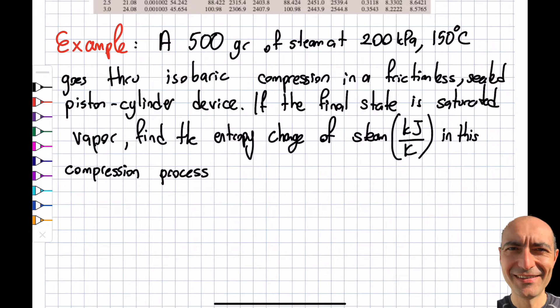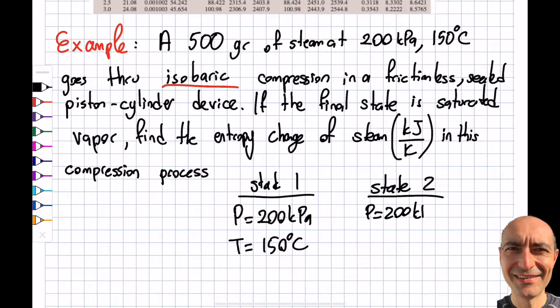I have half a kilogram of steam at 200 kilopascals. Let me write state 1: P equals 200 kilopascals, T equals 150 degrees Celsius. The process is isobaric—I've got to read carefully. What does isobaric mean? Between state 1 and state 2, pressure will be constant. So this is also 200 kilopascals. It's a compression in a frictionless piston-cylinder device. The final state is saturated vapor, so X equals 100% or 1. I need to read V, S, and whatever else I need from the table. Find the entropy change of steam in this compression process. The units should be kilojoules per Kelvin, so I have to be careful.